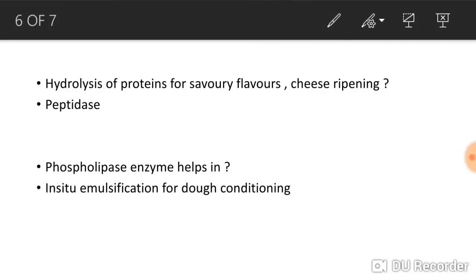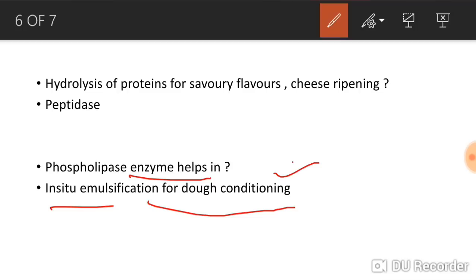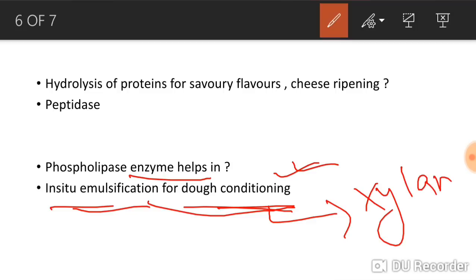Phospholipase enzyme helps in in-situ emulsification for dough conditioning. In dough conditioning, another enzyme is also used — xylanases. So there are two enzymes used for dough conditioning: phospholipase, which also does in-situ emulsification, and xylanases.